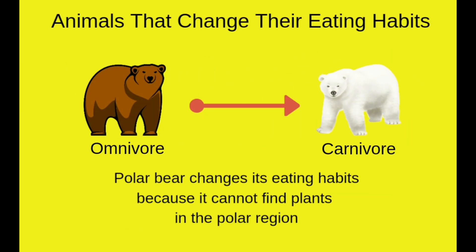Animals that change their eating habits: bear is an omnivore, meanwhile polar bear is a carnivore. Polar bear changes its eating habits because it cannot find plants in the polar region.